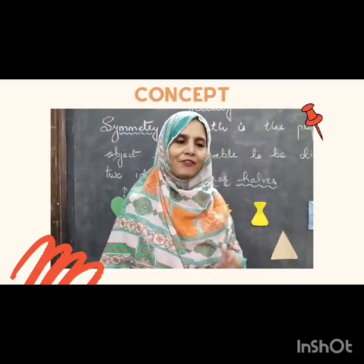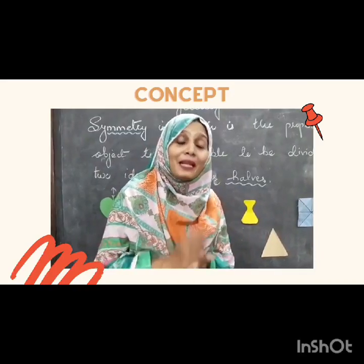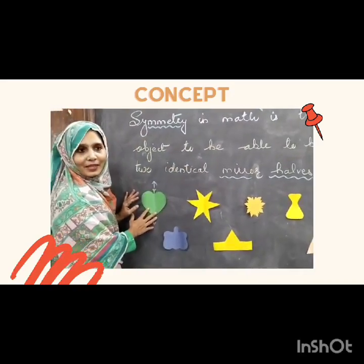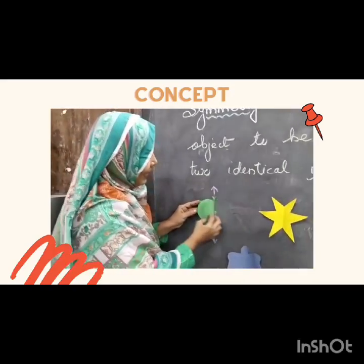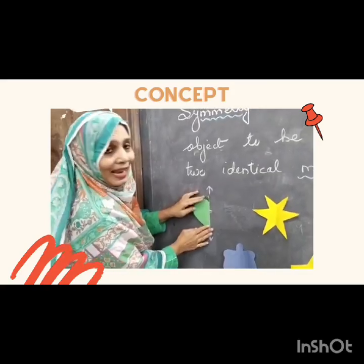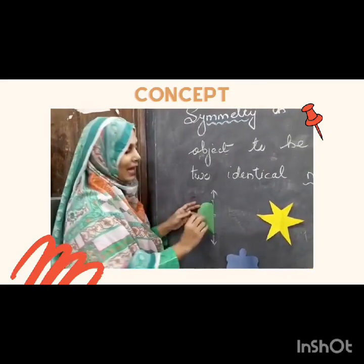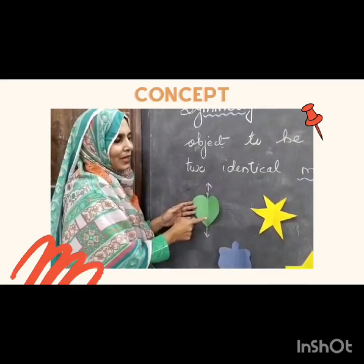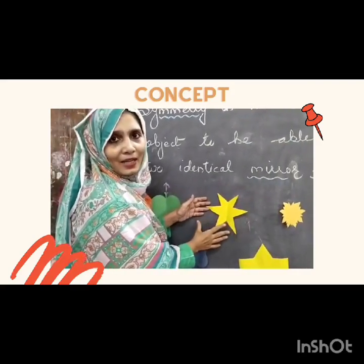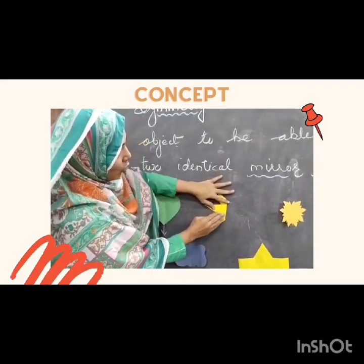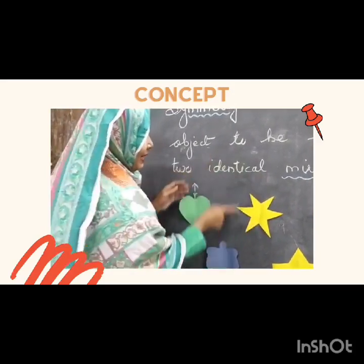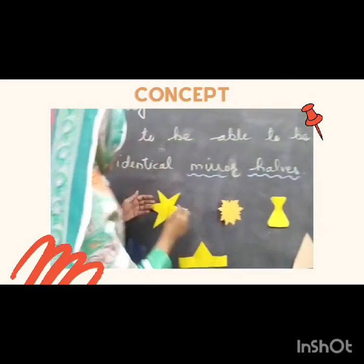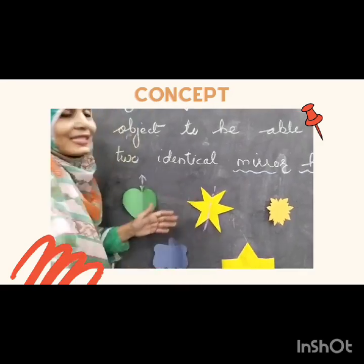When we fold the leaf, it is all over each other and divided into two similar parts. This line is called an axis of symmetry.